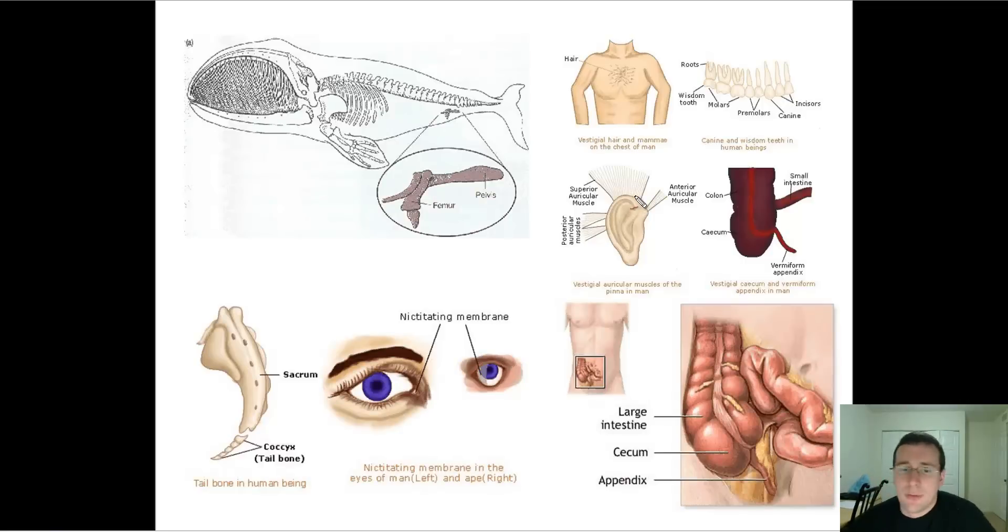Alright, another kind of anatomical structure that also proves evolution is going to be vestigial structures. Now vestigial structures are things that used to have a function, but are evidence of something that our ancestors used to do. There's a lot of examples of that.